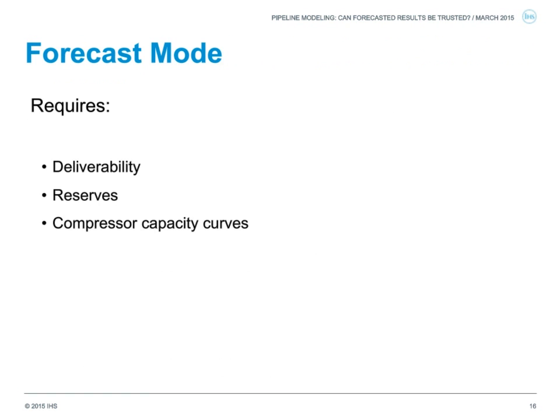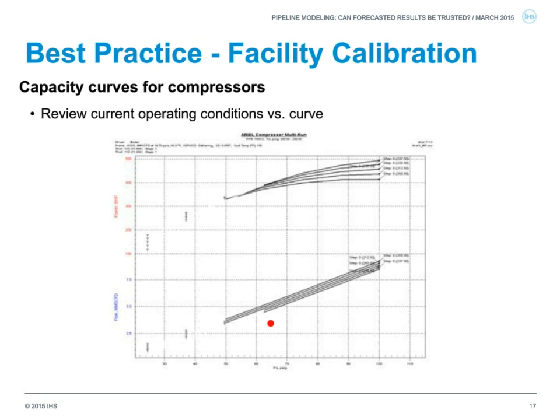Once surface calibration is done, the next step is to change the model into forecast mode and account for all changing conditions. We need to include three components: the deliverability or inflow model in conjunction with our reservoir, to account for the change in reservoir pressure as it depletes; compressor capacity modeling; and keeping the model within reasonable limits of what the field is actually capable of producing. The first step is plotting our current operating point on the compressor capacity curve.